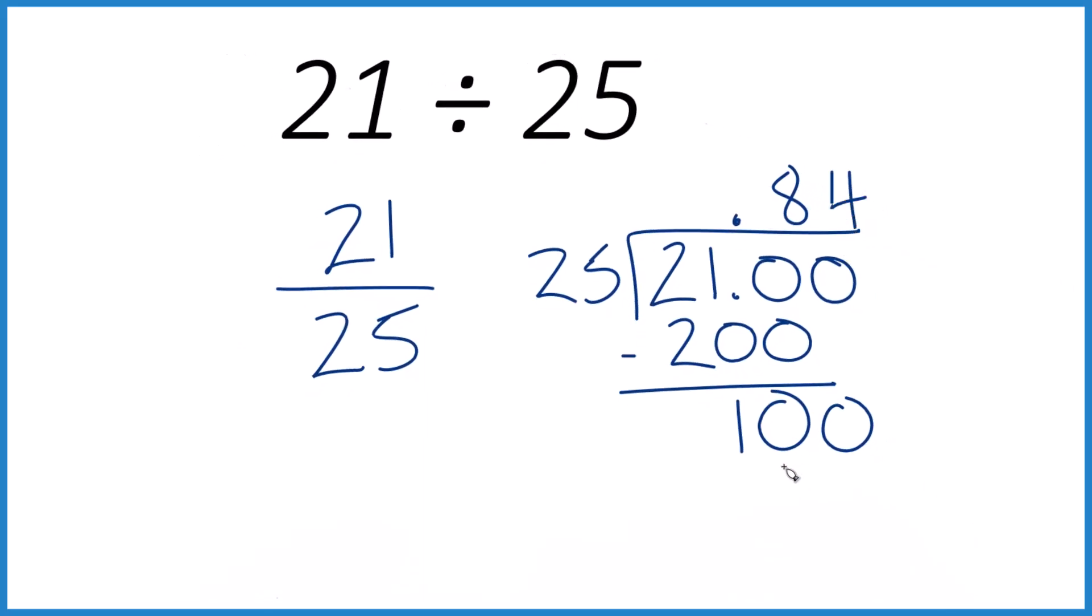4 times 25, that is 100. Subtract, you get 0, and that's it.